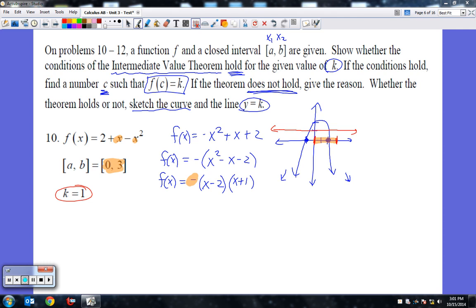All right, so going through the rules, the very first rule that we have to show for Intermediate Value Theorem is, is the function continuous on this established interval from 0 to 3? Well, we know all quadratic functions are continuous, so f of x is continuous on the interval 0 to 3.